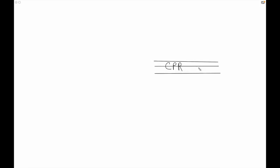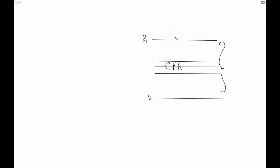In our strategy, these three lines are the CPR, here is the R1 pivot, and here is the S1 pivot. Whenever price opens between CPR and R1 and takes resistance at R1, it is going to be pulled towards the CPR like a magnet. CPR acts as a magnet. Similarly, if price opens within the S1 and CPR and takes support and gives a reversal sign, there is a fair chance that price is going to rally up to the CPR.